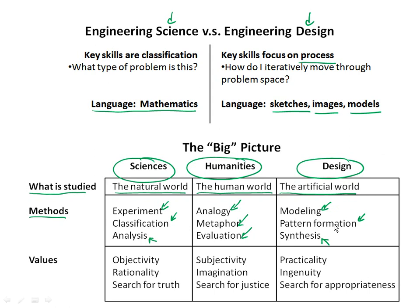Each discipline has its values — the things considered important. Scientists value objectivity, rationality, and are engaged in a search for truth. In the humanities, they value subjectivity, imagination, and are interested in a quest for justice — how do we have a more just world? In design, we value practicality, ingenuity, and we search for appropriateness: does the solution fit the problem as we broadly understand it?